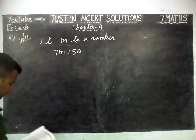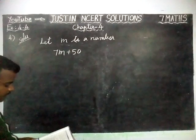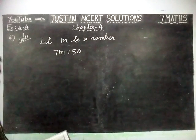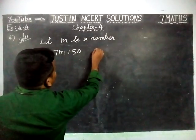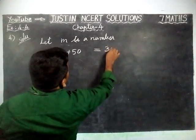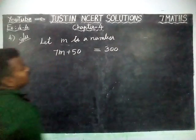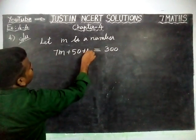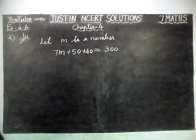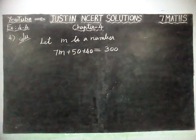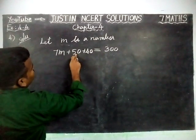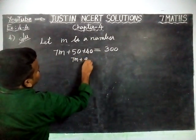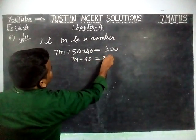Plus 50. 'And to reach a triple century, you still need 40.' To reach a triple century means 300, and we still need 40. So the equation becomes: 7M + 50 + 40 = 300.